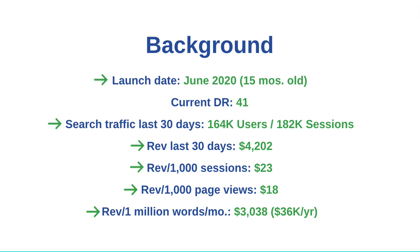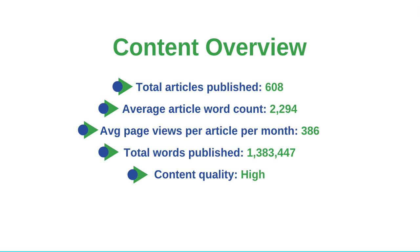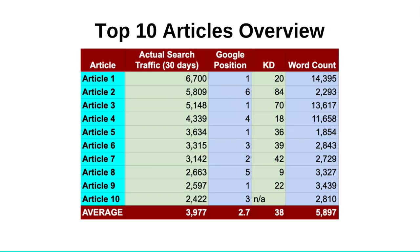You can see here some quick key revenue numbers. Now let's jump into the actual content aspect. Here's a brief content overview: total articles published at 608, average article word count 2,294, average page views per article per month 386, total words published 1.3 million. I would assess the content quality on the site as high — not very high, but I have an in-house writer who's more or less running the site. She's exceptional, so the content is very, very good. That probably accounts for its very quick growth over the last 15 months.